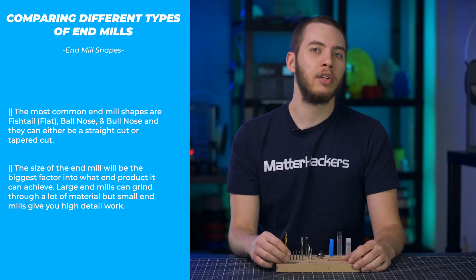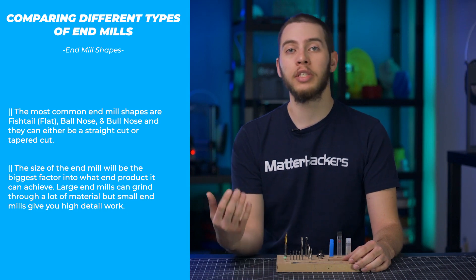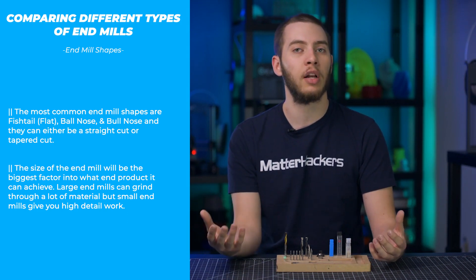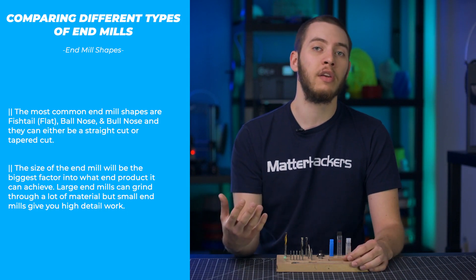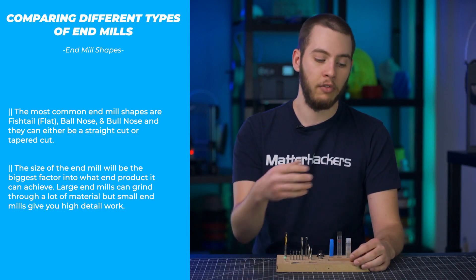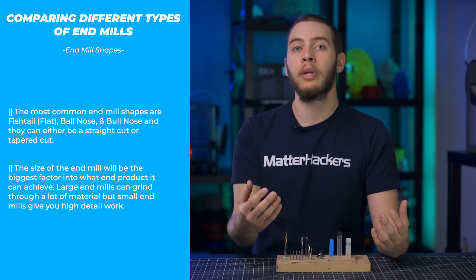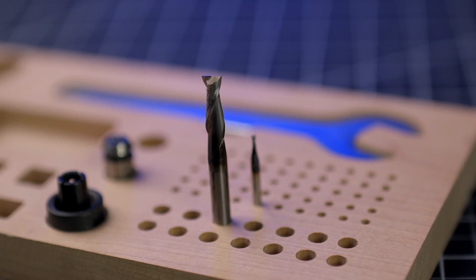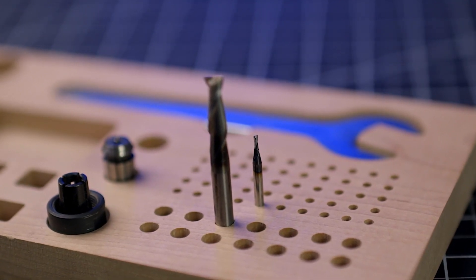Size is the biggest determination of what you can do with any given end mill. Large ones excel at grinding through a lot of material at once, but they can't achieve a lot of detail work. With CNC milling, the radius of your end mill is going to be the radius of any corner on the internal pockets, so you'll never be able to achieve a perfectly square corner. Smaller end mills can be used for each pass to clean up an edge and get the part to the final dimension and shape.